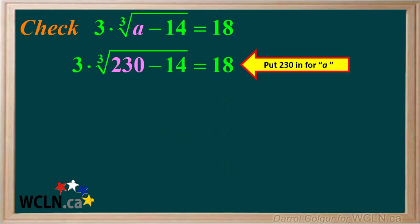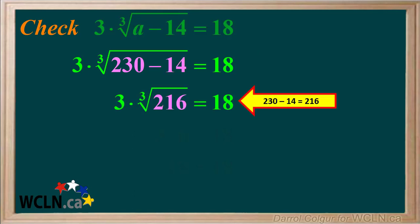Now that we substituted 230 in for a, we'll work out the value inside the radical. It is 230 minus 14. 230 minus 14 is equal to 216.